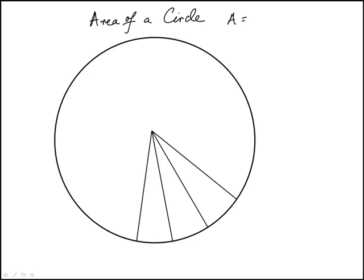So a lot of people are familiar with the formula for the area of a circle, and here I want to give a quick conceptual proof of why it is pi r squared.